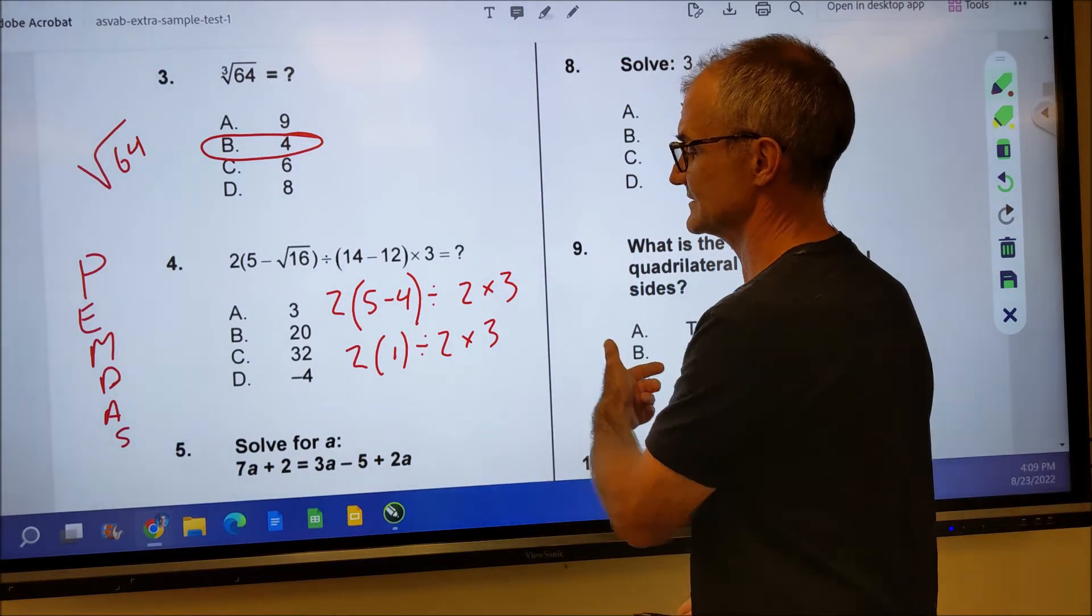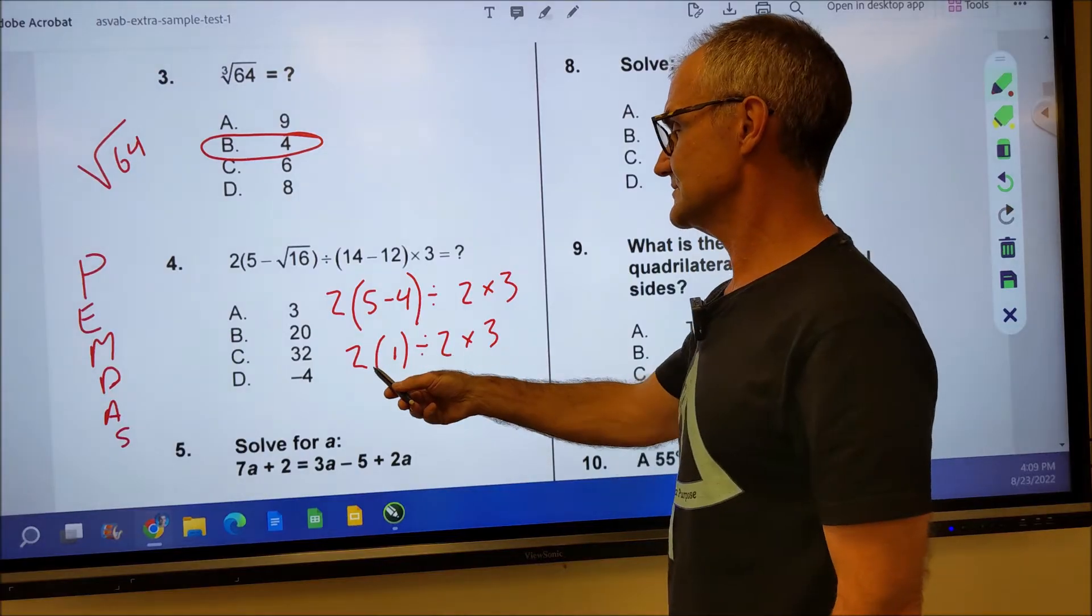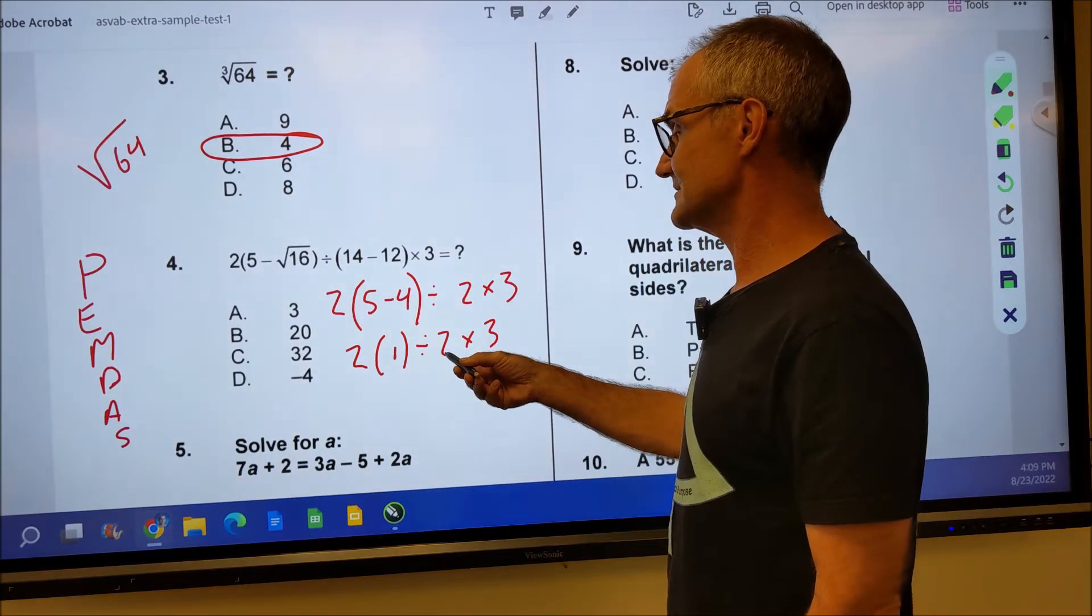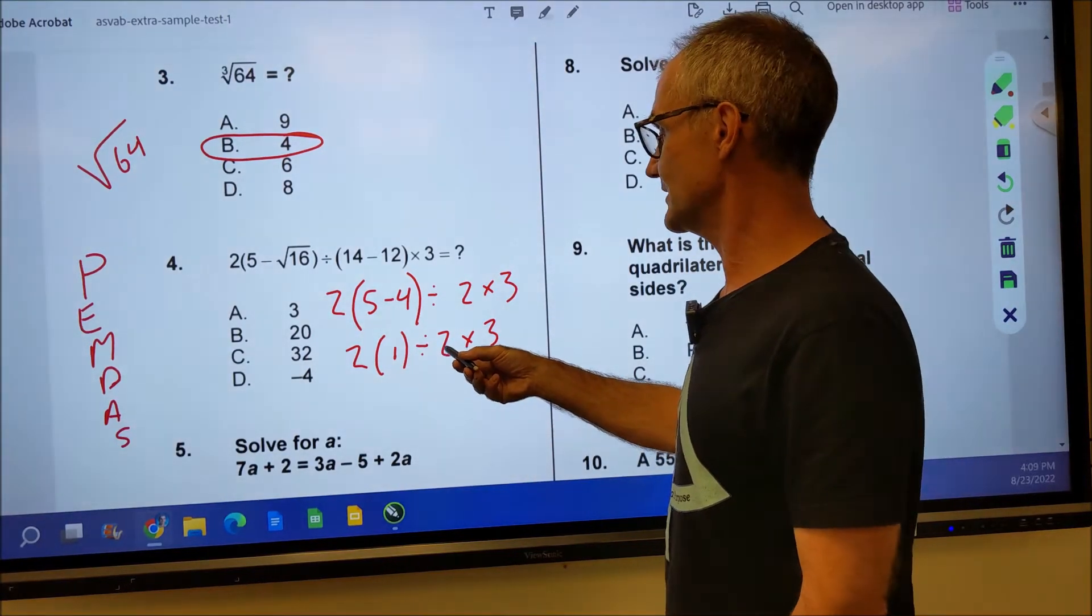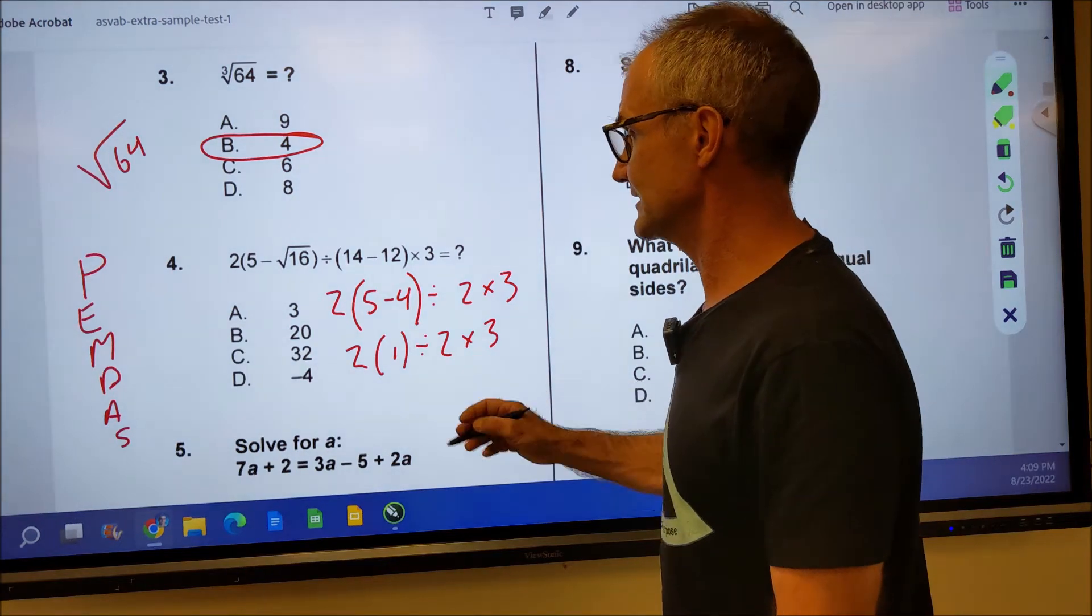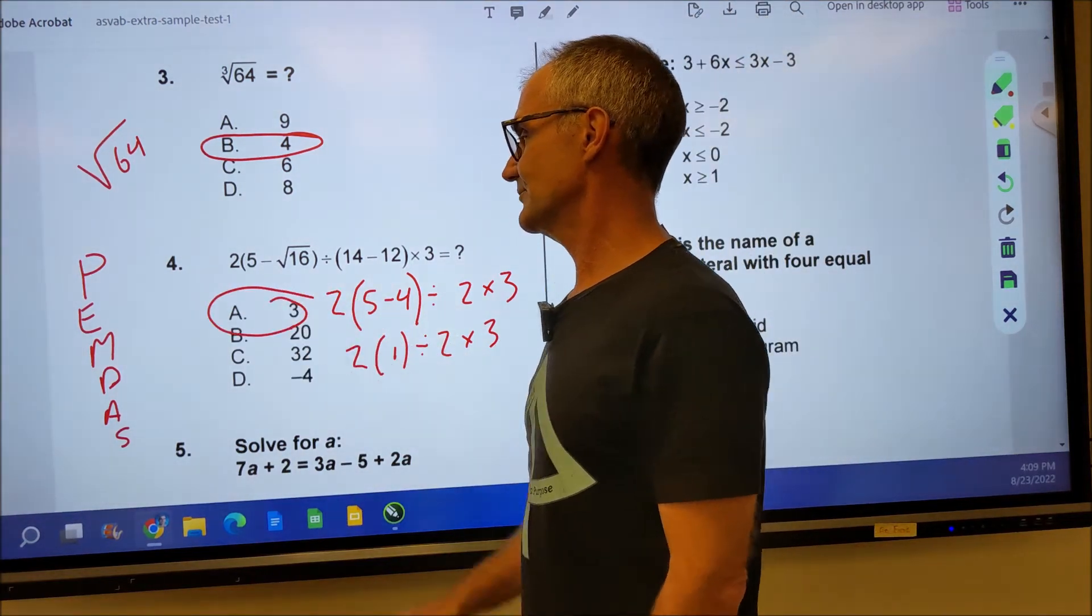It's all multiplication division. I work left to right. 2 divided by 2. 2 divided by 2 is 1. 1 times 3 is 3. My answer is A, three right there.